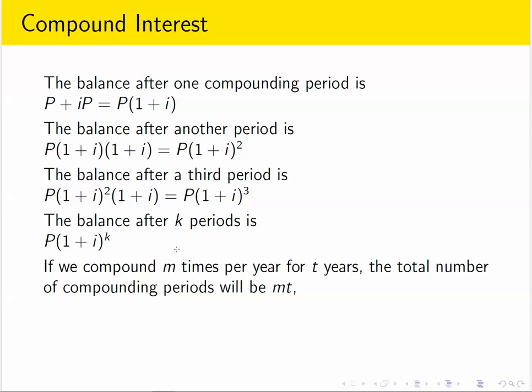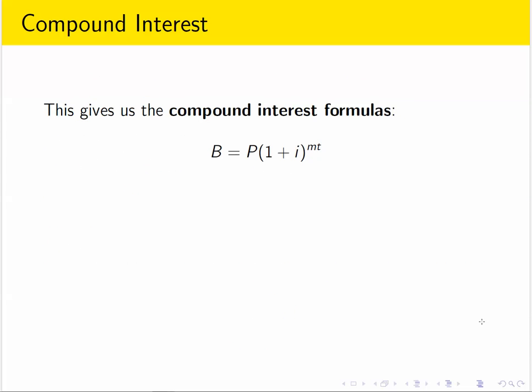So if your compounding frequency is m, you're giving interest m times per year. And if you do that for t years, the total number of periods that pass will be m times t. For example, if you compound quarterly, that would be four times per year. If you do that for 10 years, you'll have given interest 40 times. So if we plug that in for k, the number of compounding periods, that becomes the new exponent m times t. So this expression represents the balance if you add periodic interest rate of i, m times t many periods.